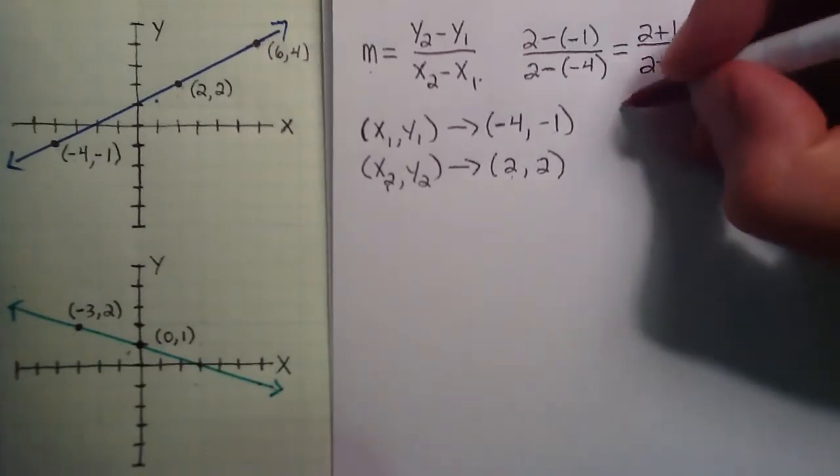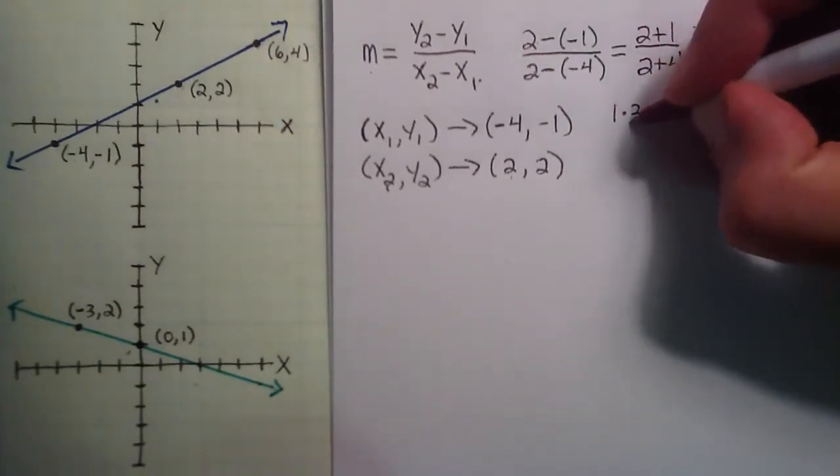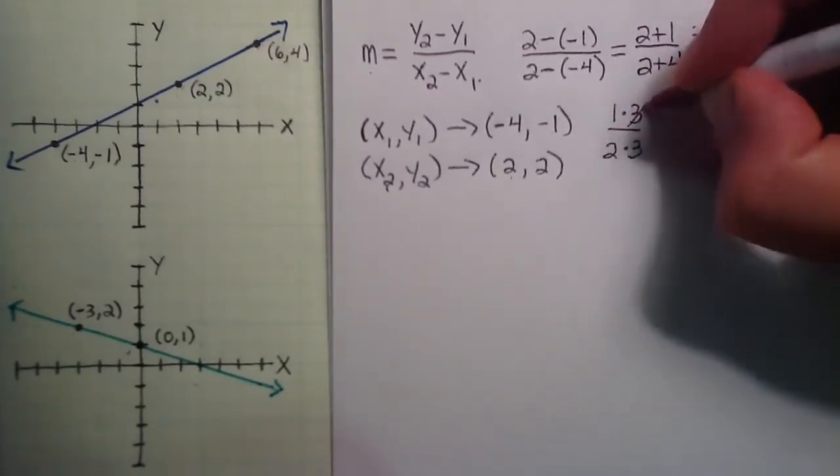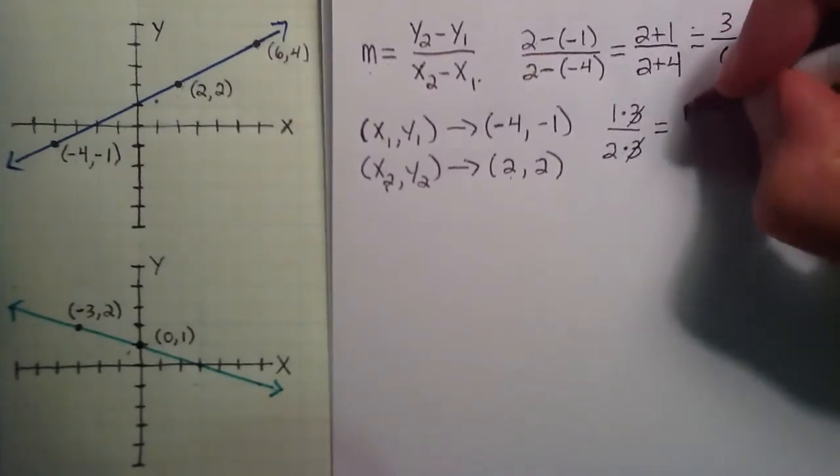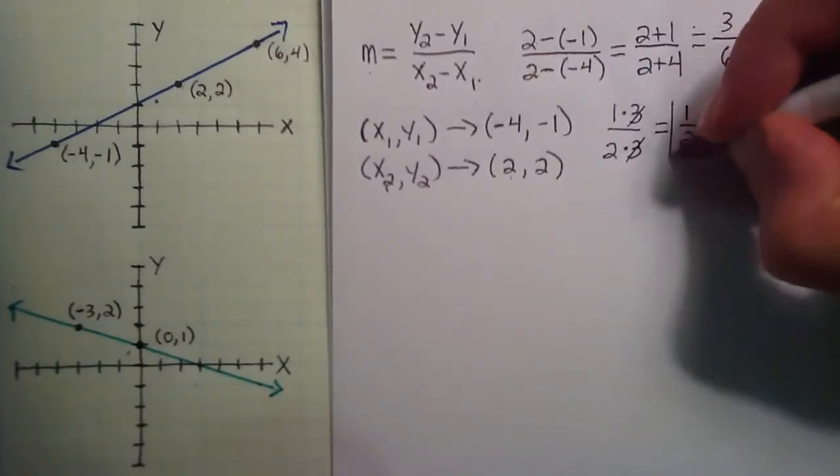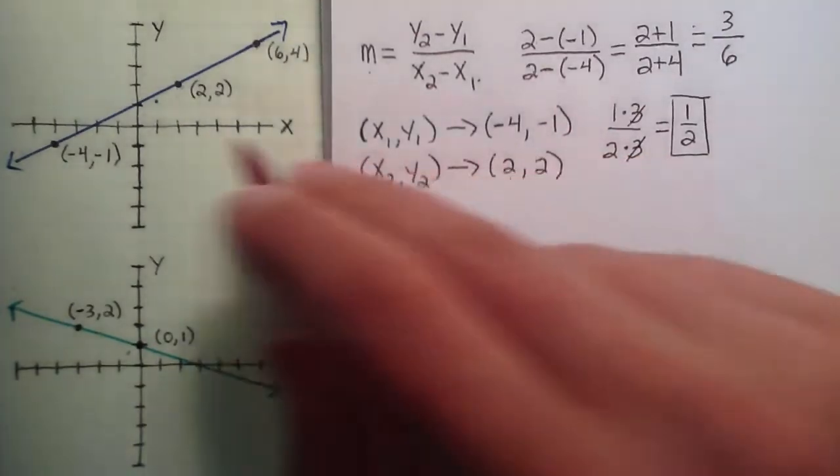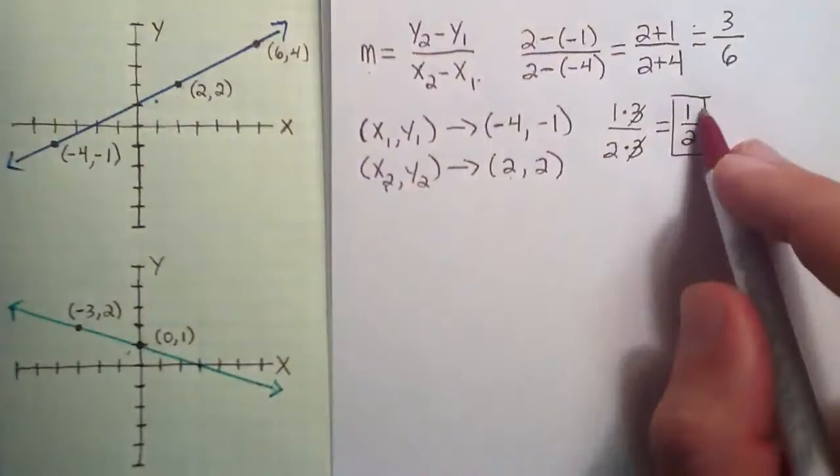So 3 is the same thing as 1 times 3, and 6 is the same thing as 2 times 3. 3 divided by 3 cancels, giving us a slope of 1 half. So by using these two points, we've determined that the slope of this first line is 1 half.